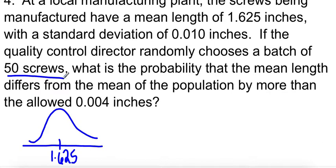So we can't be more than 0.004 above our mean or below it. So if you take 1.625 and add 0.004, you get 1.629. And if you subtract it, you get 1.621. And we want to know what's the probability that we're either too short or too long for these screws. Now, since this is symmetric, those two areas are going to be equal, so you only have to find one of them and then just double it.